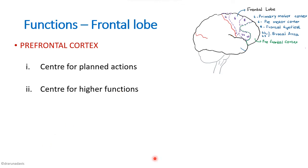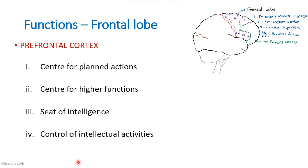The prefrontal cortex is called the seat of intelligence because short-term memories are registered here, helping us keep track of different bits of information and recall them. It is also the main area for control of intellectual activities: it has the ability to plan the future, allows a person to concentrate on a central theme of thought, and helps with depth and abstractness of thought.